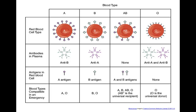Let's also discuss compatible blood types in an emergency situation. It is best to receive your own blood type if you are in need of a transfusion, but some people are able to receive donor blood that is not their type. Type A blood can receive type A and also type O. Type B receives type B and also type O. Type AB can receive blood type A, B, AB, and O. But type O can only receive itself — type O.